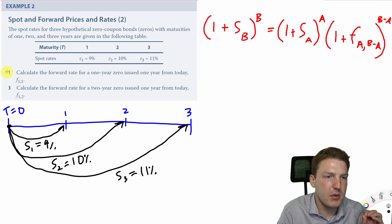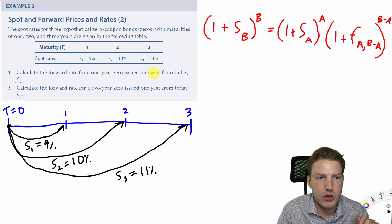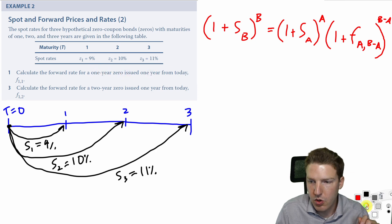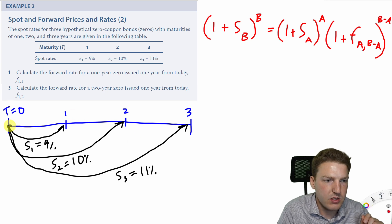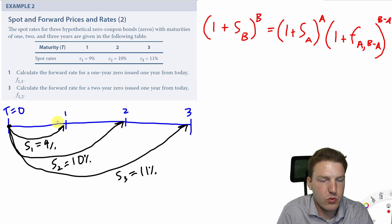Now in the first problem it's asking us, calculate the forward rate for a 1 year 0 issued 1 year from today. So what this is actually asking us is if today we wanted to lock into a contract that says in 1 year we wanted to pay a certain amount of money so that we could receive a dollar 2 years from today. So that is actually F1, 1.